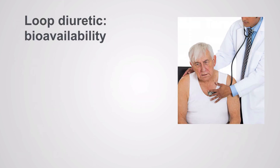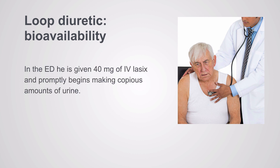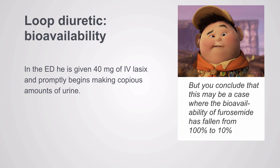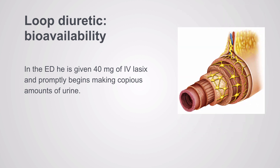Here's a patient case: a gentleman with heart failure has been taking his medications regularly but has had a 30-pound weight gain over the last month and is forced to wear slippers. He comes to the ER with dyspnea, is given IV Lasix, and promptly begins making copious amounts of urine. A cynic concludes he wasn't taking his diuretics, but another possibility is that bioavailability of furosemide has fallen from 100% to 10%, because edema throughout the body also occurs in the intestinal tract, decreasing absorption of furosemide so the oral dose is no longer adequate.